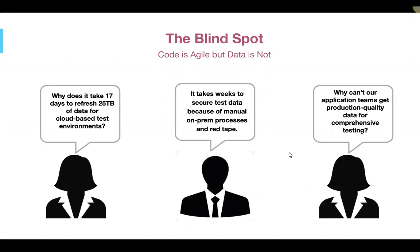But what happens when your code is now agile in the cloud, but your data is not? While DevOps practices are evaluated and improved, the same should be true for the data pipeline that feeds the release train. The data pipeline has become a blind spot in an automated DevOps workflow, which results in a data agility problem that drives bad behavior and slows the delivery pipeline. A lack of data agility becomes apparent at scale — it can take days to refresh a large 25-terabyte database for cloud-based test environments, and weeks to secure test data because of old manual on-prem processes.